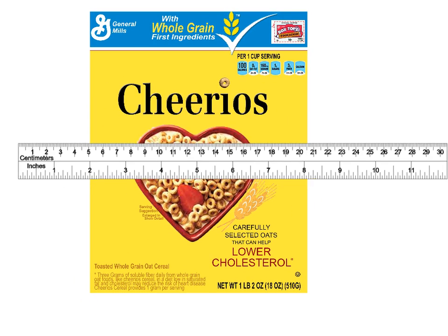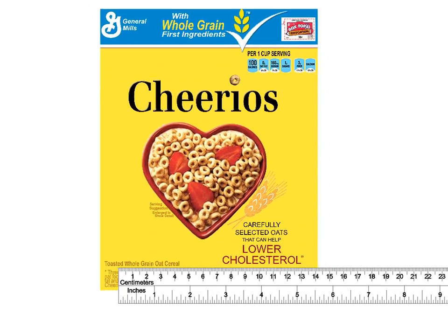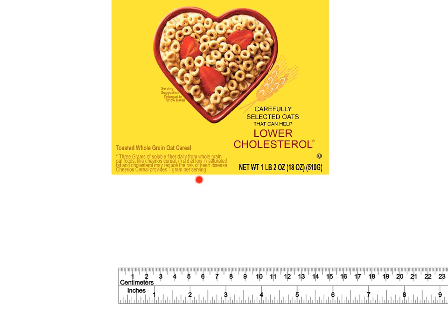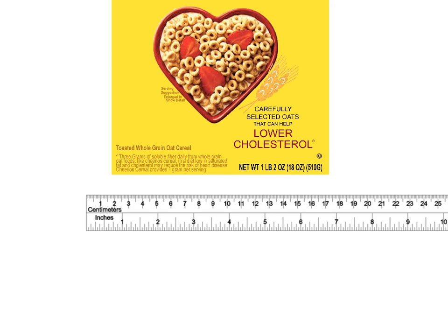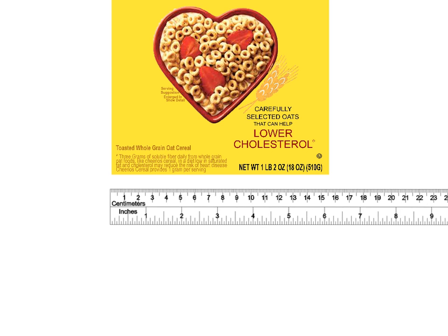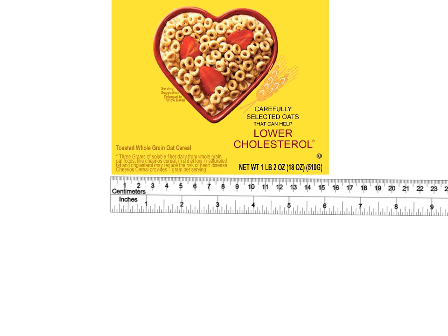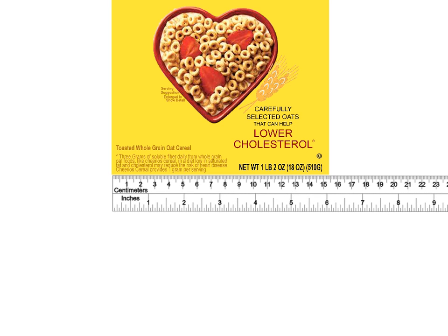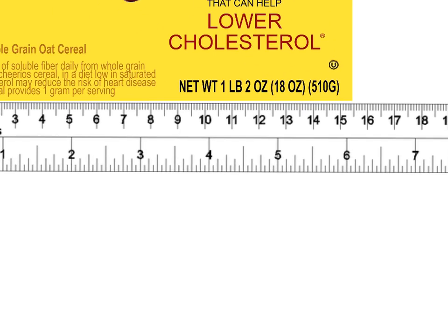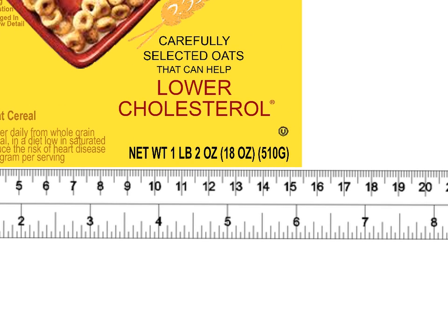We're going to take an object — in this case let's use this cereal box — and say we want to measure the width of that cereal box. We've got a ruler here that has both centimeters and inches on it. If we measure the length of that cereal box with centimeters, we can zoom in and see it's right about here — it's about 15 and a half, because here's 15 and here's 16.